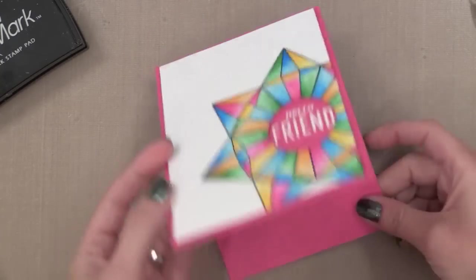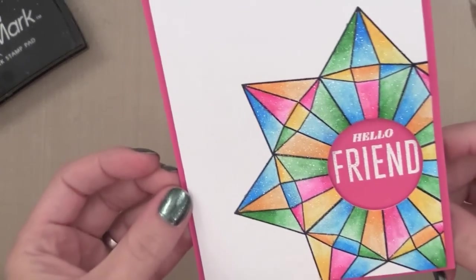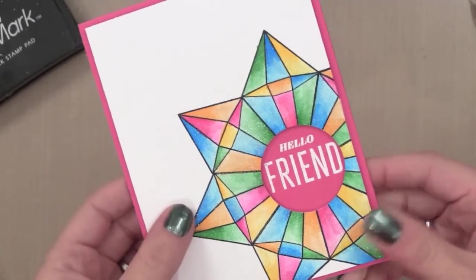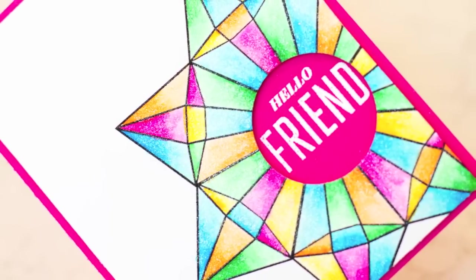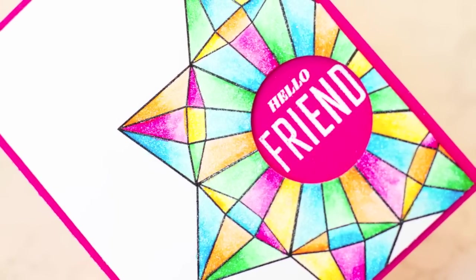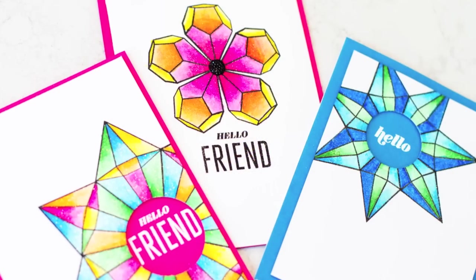Check out that shimmer that you get with the Wink of Stella. So there we took a holiday ornament stamp set and changed it into really colorful flowers and stars. Just another way you can stretch your stamps.